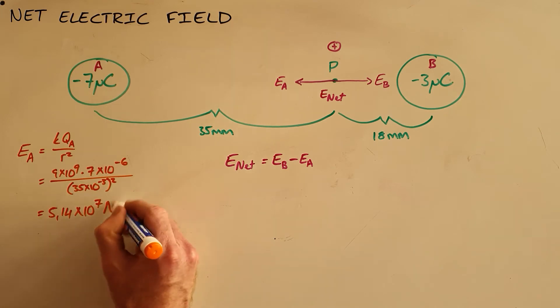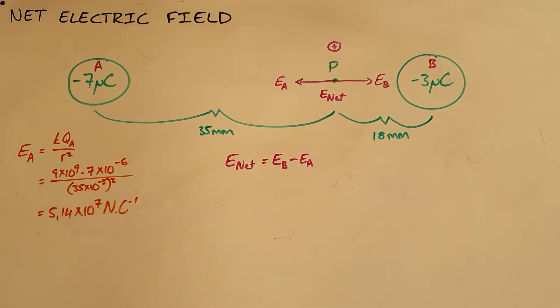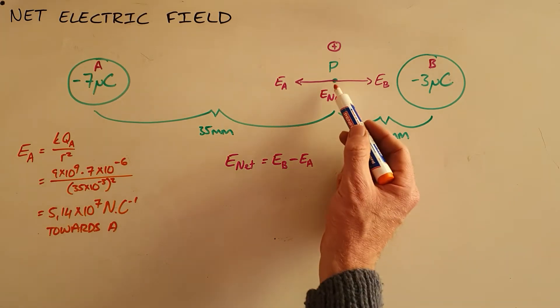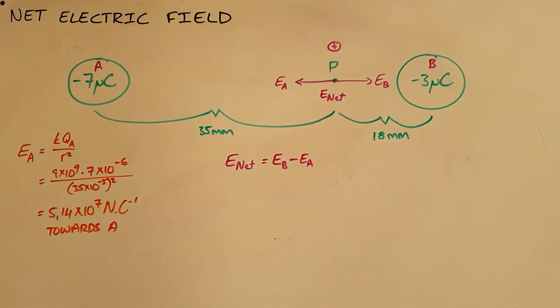And what we can see is that is towards A. The electric field is the direction that a positive charge would move if placed at that point, and here that is towards A.